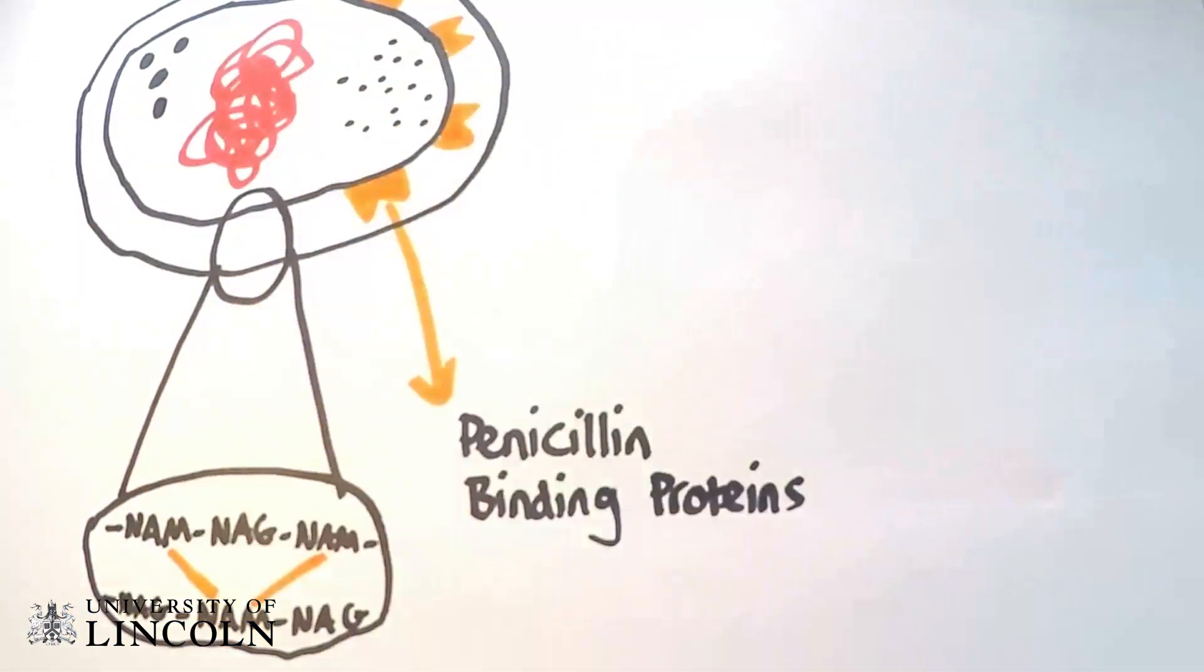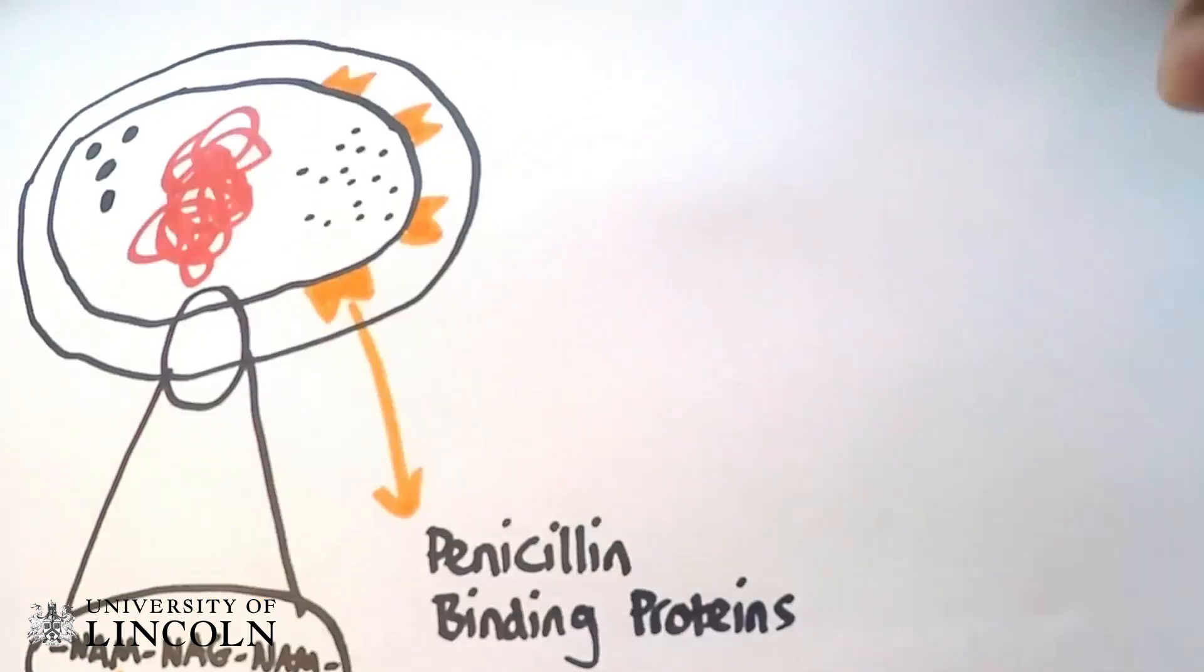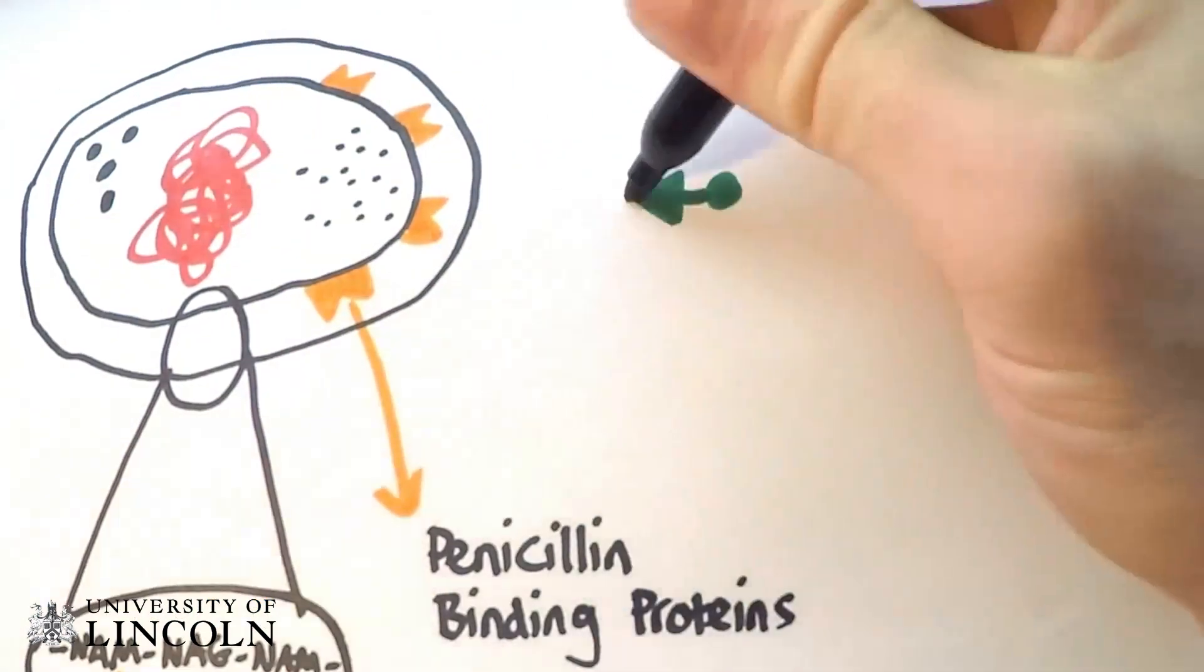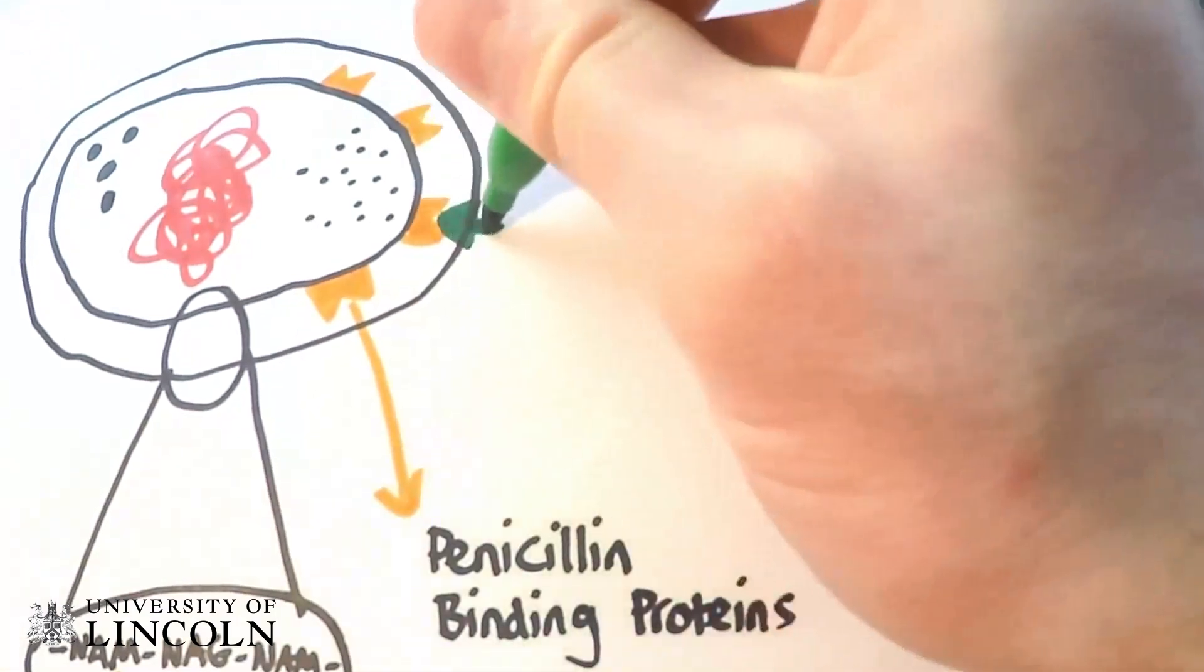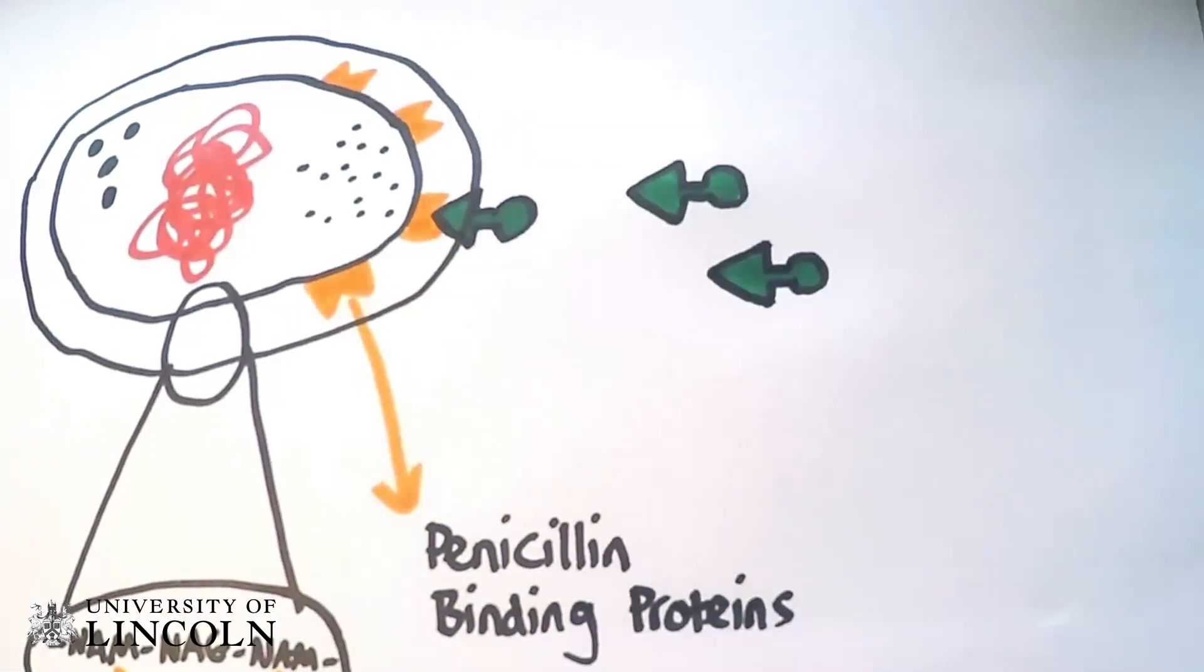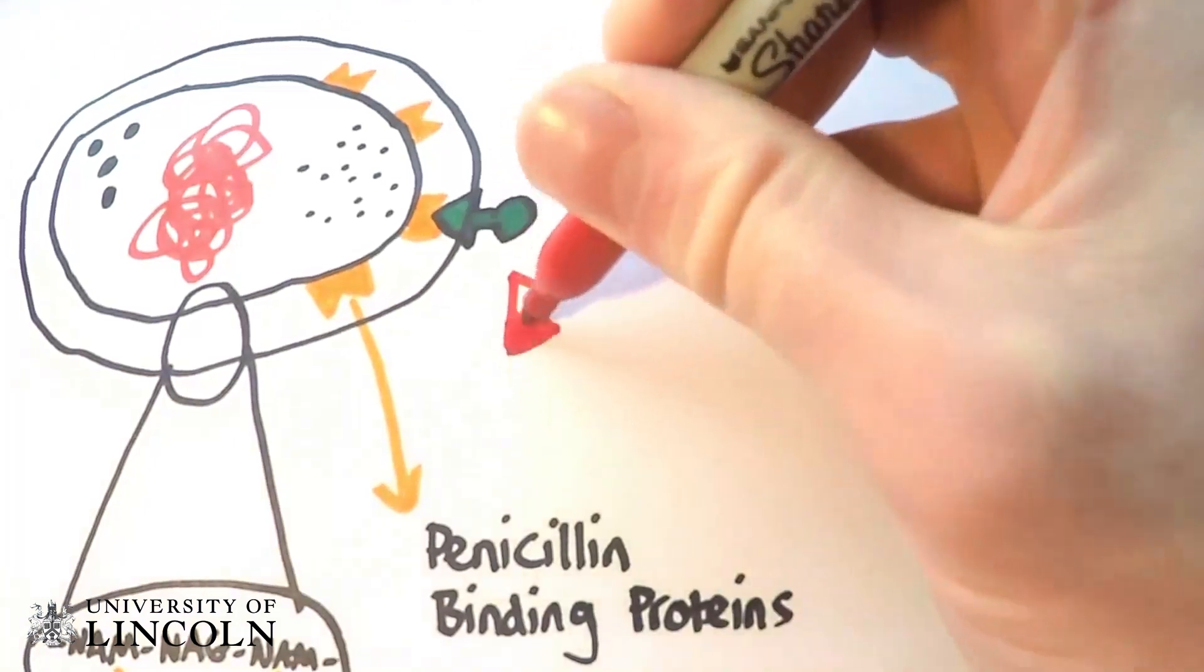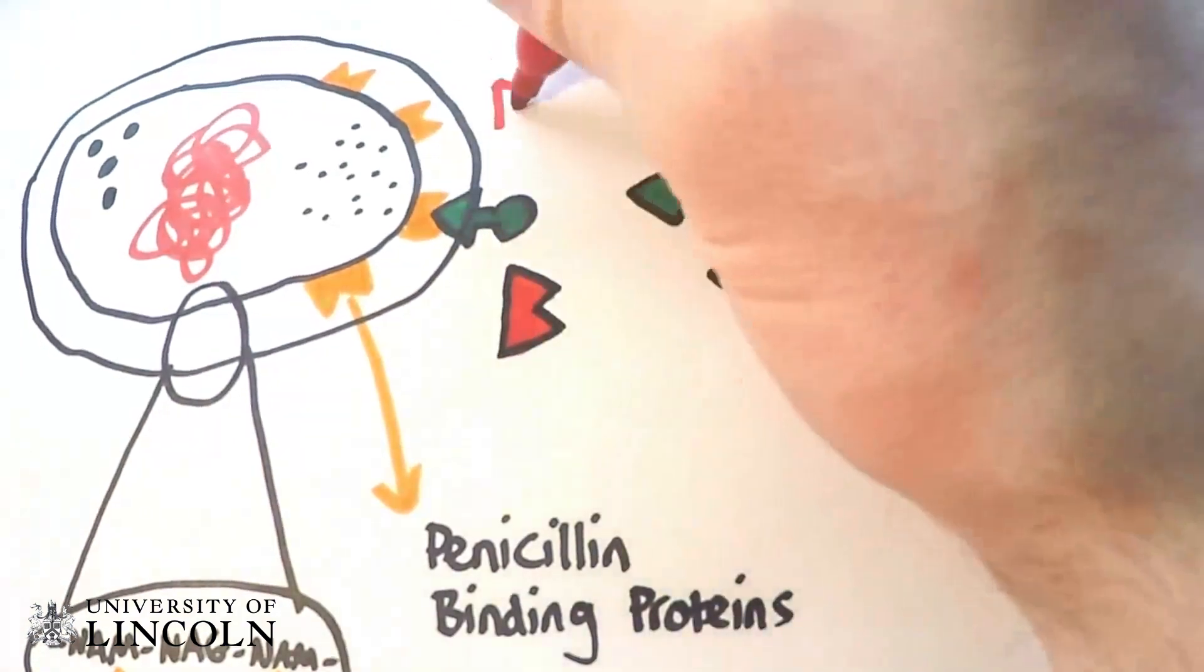Penicillin binding proteins cross-link NAM subunits by forming peptide bonds. Beta-lactam antibiotics bind to penicillin binding proteins and prevent cross-linking, causing weakened cells that eventually burst and lyse under osmotic pressure.